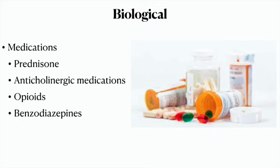The biological section covers what happens in the body. First, look at medications — are any causing depression, anxiety, or other psychiatric symptoms? For example, prednisone, a steroid, can lead to anxiety, mood changes, irritability, and psychosis. Anticholinergic medications can cause confusion or altered sensorium, especially in the elderly. Opioids and benzodiazepines carry risks for addiction or abuse, and in older or vulnerable populations can cause mood changes or mood swings.